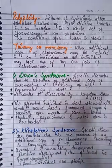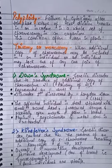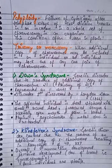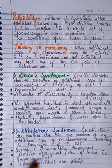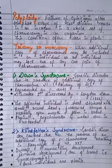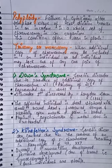Klinefelter syndrome is a genetic disorder caused by the presence of an additional copy of the X chromosome, resulting in a karyotype of 47, XXY. There is overall masculine development but also some feminine development such as development of breast tissue, known as gynecomastia.